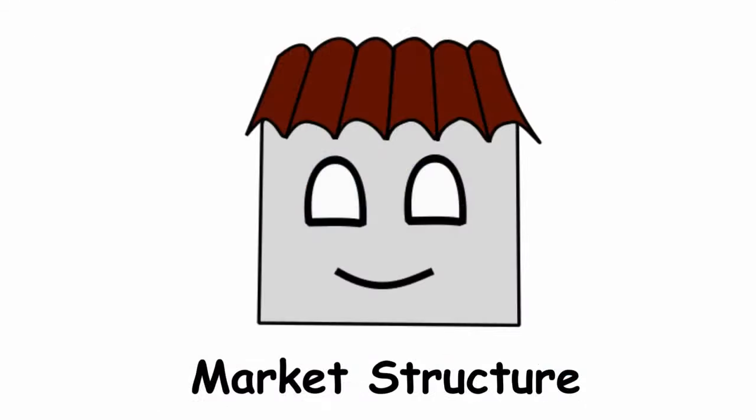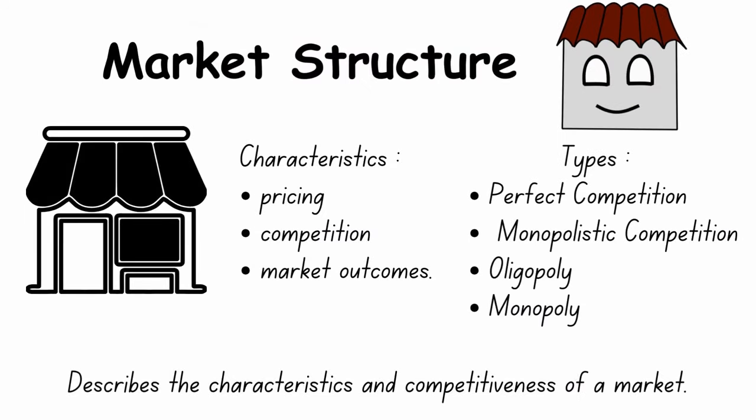Market Structure describes the characteristics and competitiveness of a market. The characteristics include pricing, competition, and market outcomes. There are four different types: perfect competition, monopolistic competition, oligopoly, and monopoly.